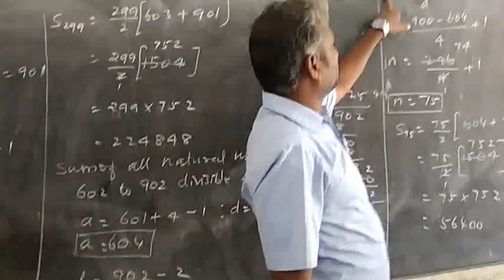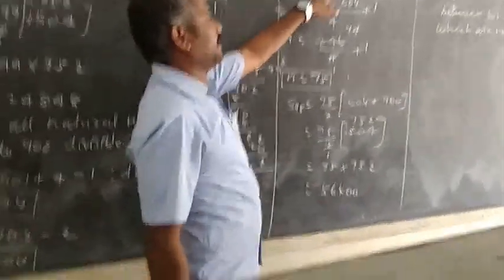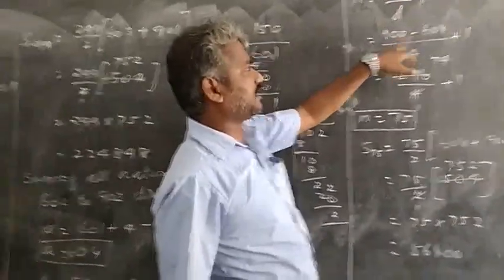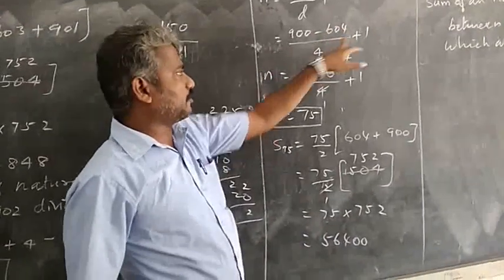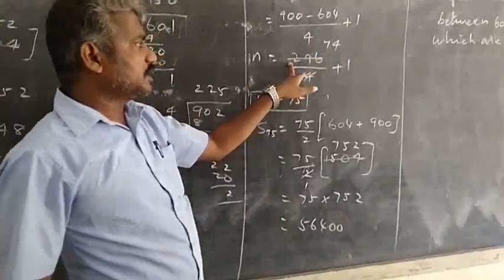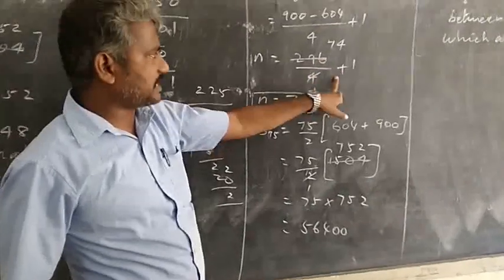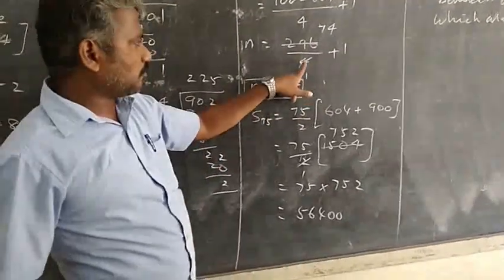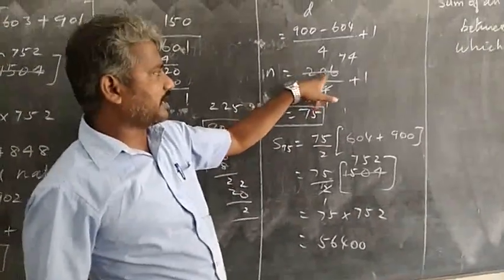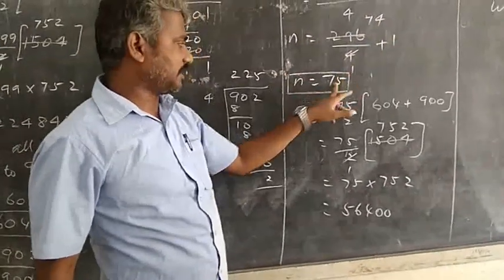N equals L minus A by D plus 1. L value 900 minus 604 divided by 4 plus 1. Subtracting: 296 by 4 plus 1. 144 is 4, 7 times 4 are 28, 4 times 4 are 16. 74 plus 1 equals 75.